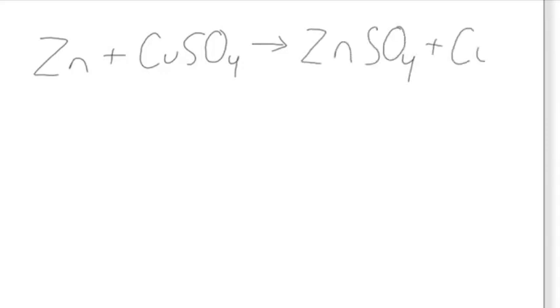I'm going to show you an example of single displacement. Let's say your problem is Zn plus CuSO4 yields ZnSO4 plus Cu. CuSO4 will break down into Cu+2 plus SO4-2, and ZnSO4 will break down into Zn+2 plus SO4-2.